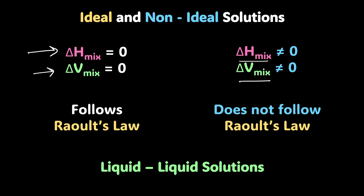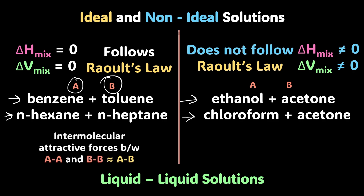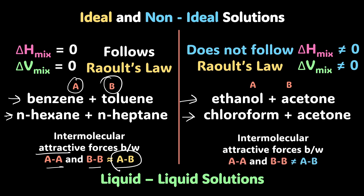Here are some examples. Benzene + toluene and n-hexane + n-heptane are ideal solutions. Ethanol + acetone and chloroform + acetone are non-ideal solutions. For ideal solutions, the intermolecular attractive forces between A–A and B–B molecules are almost the same as the A–B forces. For non-ideal solutions, these forces are different.